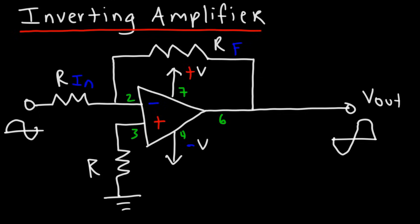Now when you have a feedback resistor, the voltage gain is said to be a closed loop voltage gain and that gain is equal to RF divided by RN or the input resistance. Now of course because the signal has been inverted, we need to put a negative sign here. So that's how you can calculate the gain for this particular circuit.